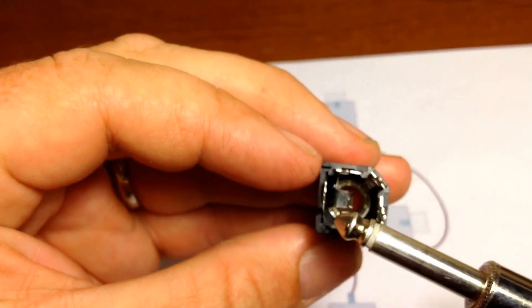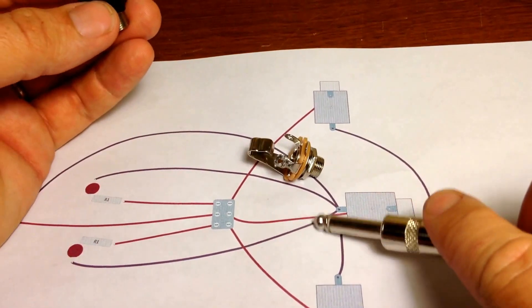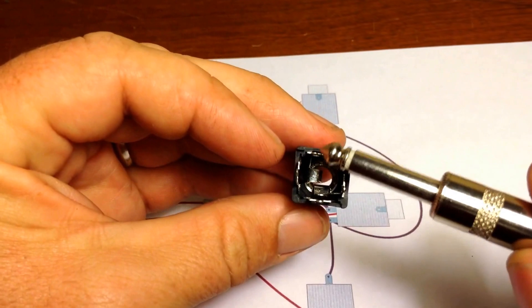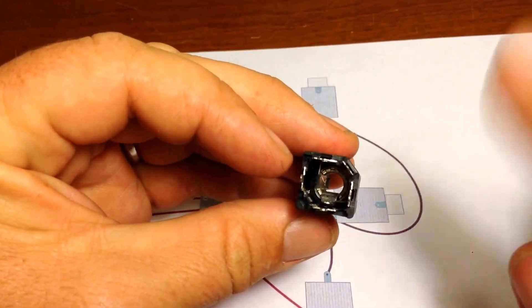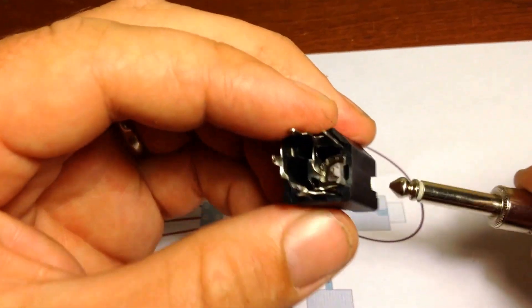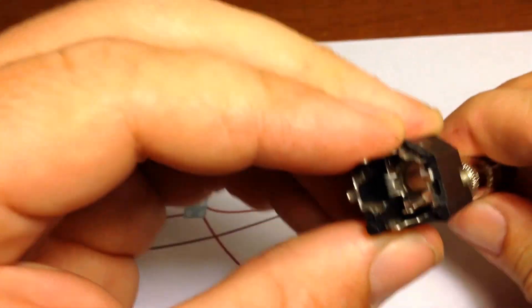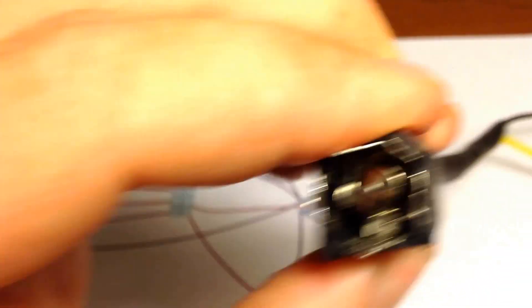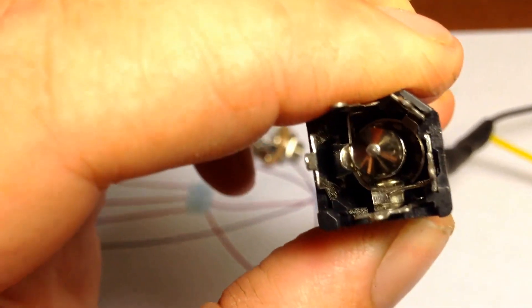So when you take your quarter inch jack, right now these two grounds are not connected, so there's no electricity can flow through here because you're running your LEDs and your power to this one. So right now there's no flow of electricity. It basically acts as a switch in the off position, it breaks contact.